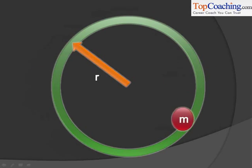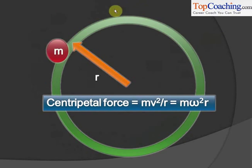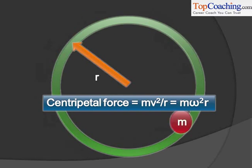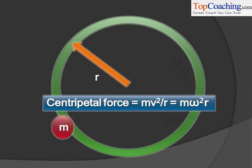Since we have now learned about the concept of force, we can say that every particle of mass m that moves in a circle requires a force mv squared by r acting towards the center of the circle. If a particle is undergoing circular motion, then definitely a force mv squared by r must be acting towards the center of the circle.